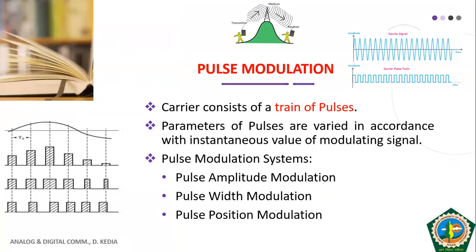In analog communication, we had a high-frequency sinusoidal carrier, as discussed in AM and FM, and as shown in the slide. In pulse modulation, instead of this high-frequency continuous sinusoidal carrier, we have a pulse train. We have a carrier in the form of pulses. 'Train' means we have a continuous series of pulses, and we call this a carrier pulse train or pulse carrier.